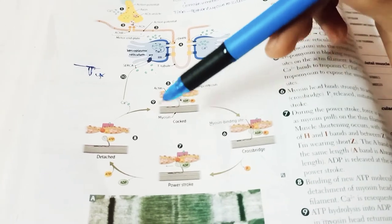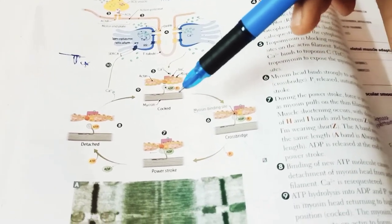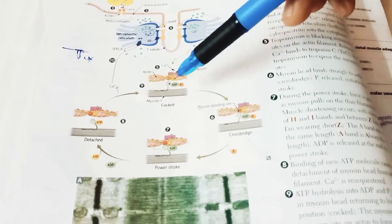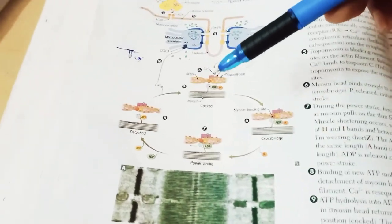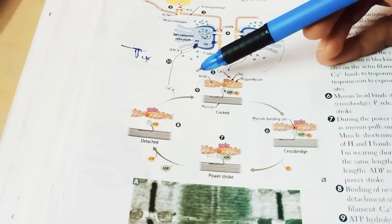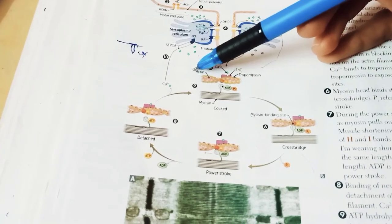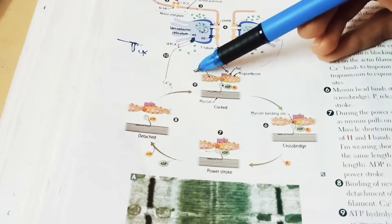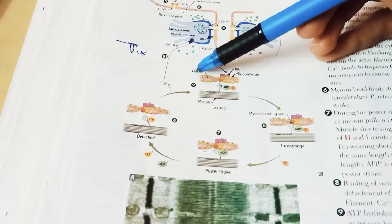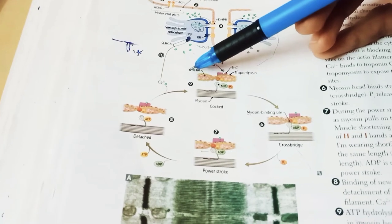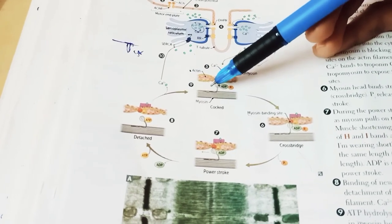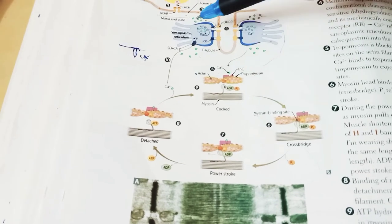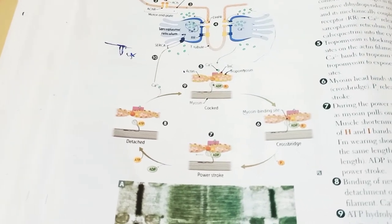If calcium remains in the cytoplasm, the process continues by myosin binding to a new actin site. ATP hydrolyzes into ADP and Pi, returning the myosin head to a high-energy position for another cross-bridge cycle. Reuptake of calcium by SERCA leads to muscle relaxation.